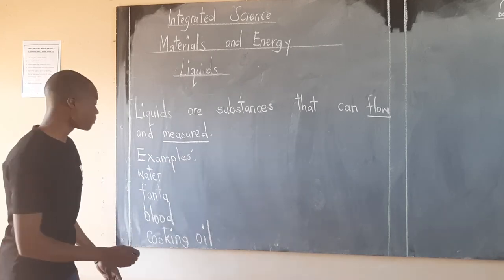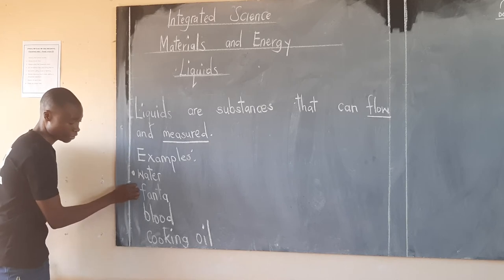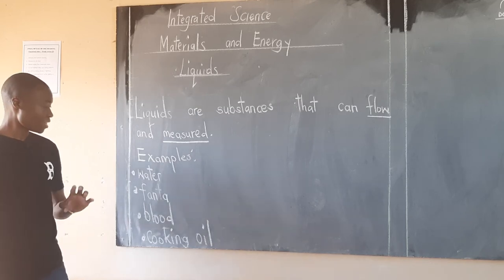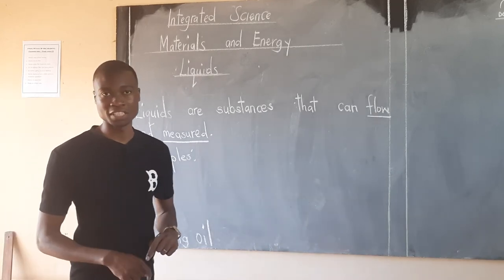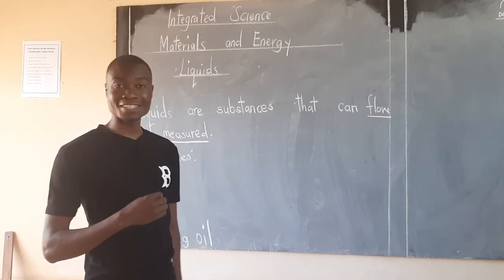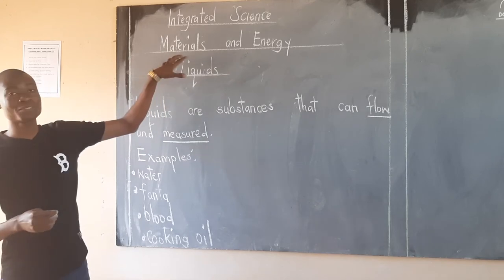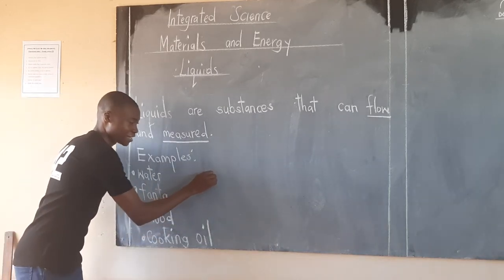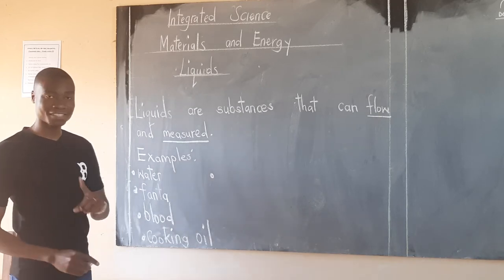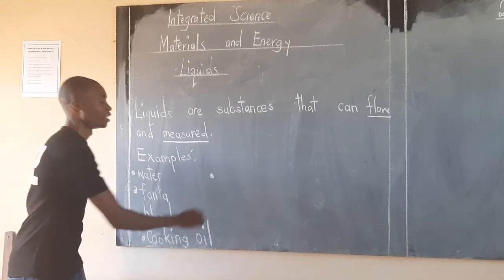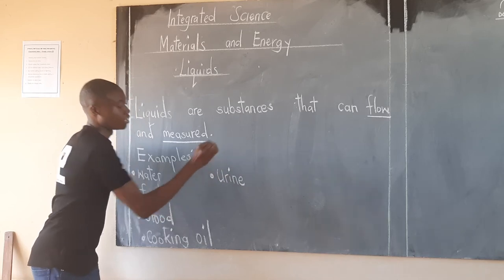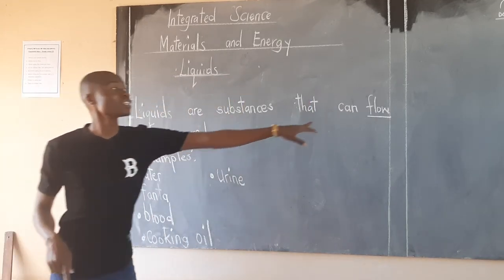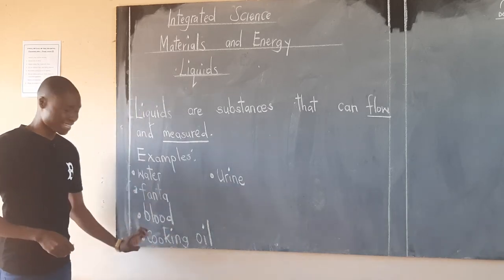Apart from that, I would like you to mention some more examples of liquids. There are some liquids that come out of our bodies. There is also one example that I'm going to give you. This example is urine. Urine is also a liquid because it is able to flow and it can also be measured. So these are some of the examples of liquids.